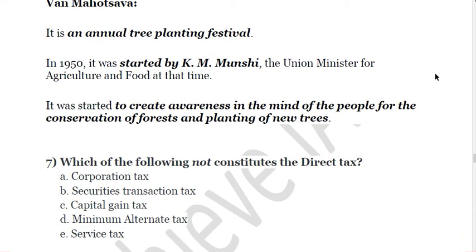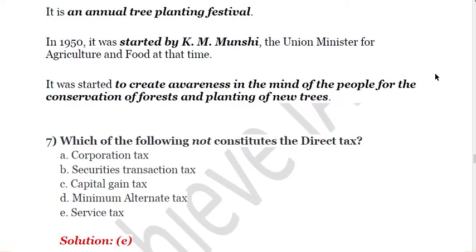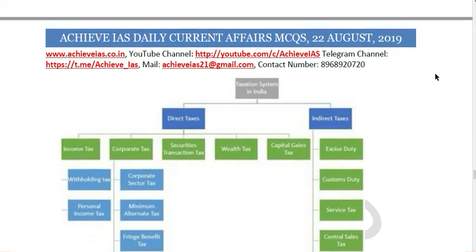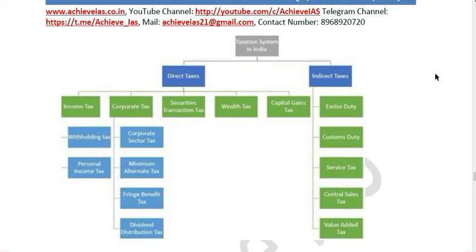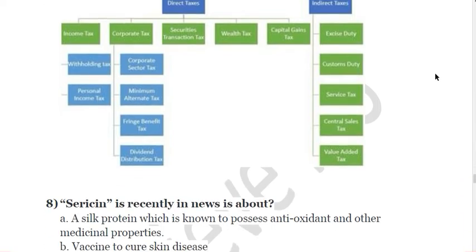Next question: which of the following does not constitute a direct tax? Options are: A. Corporation Tax, B. Securities Transaction Tax, C. Capital Gains Tax, D. Minimum Alternate Tax, E. Service Tax. The answer is Service Tax, because Corporation Tax, Securities Transaction Tax, Capital Gains Tax, Minimum Alternate Tax, and Fringe Benefit Tax all fall under direct taxes. The answer is E. A diagram is included showing direct taxes: Income Tax, Corporate Tax, Withholding Tax, Personal Income Tax, Minimum Alternate Tax, Fringe Benefits Tax, Dividend Distribution Tax, Securities Transaction Tax, and Capital Gains Tax.